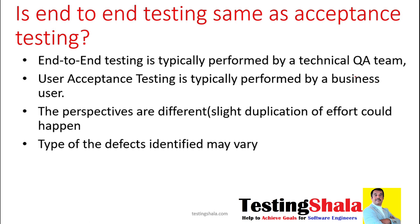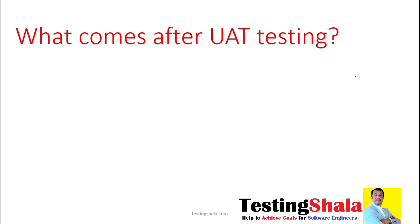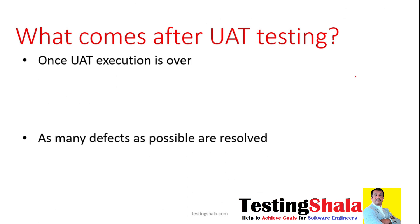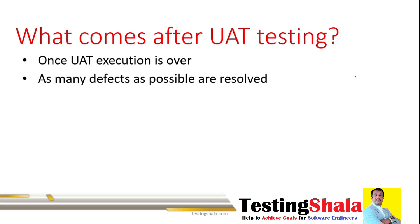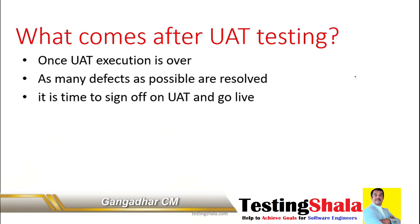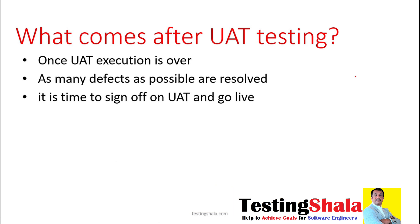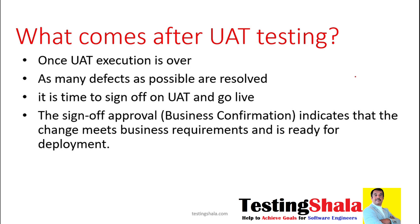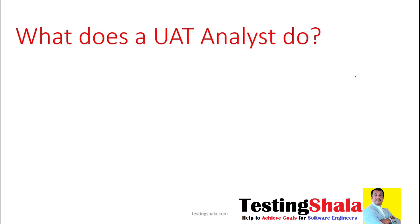The kinds of defects or bugs found will also be different as part of end-to-end versus UAT. What comes after UAT testing? Once UAT execution is over, there could be many defects logged. Developers fix those defects and they get re-verified. Once UAT is successful, the UAT team signs off, and then the overall product or application is ready for deployment.